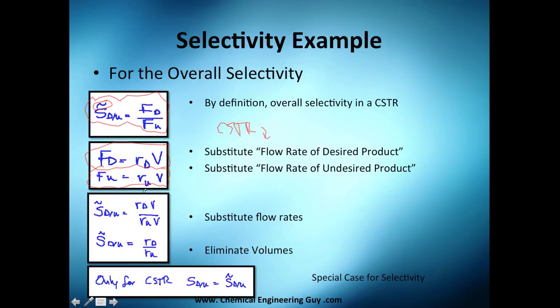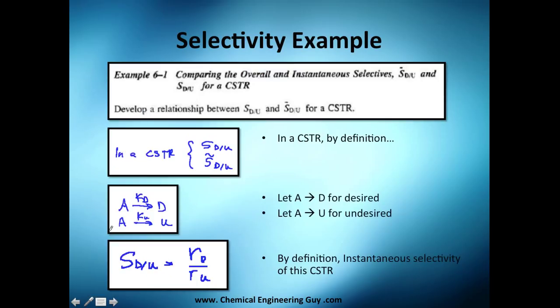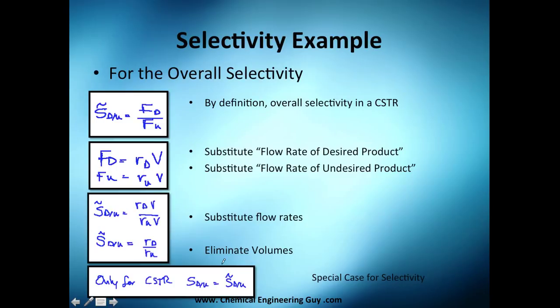So why not substitute this into this equation? Once you substitute, you get the rate of the desired product and rate of the undesired product. Since we're using the same volume, we can cancel this and we'll end up with this equation, which is exactly the same equation - rate of reaction of the desired product versus rate of reaction of the undesired product. You'll see that this is a special case for selectivity in which the CSTR has both selectivities - both the overall and instantaneous are the same.